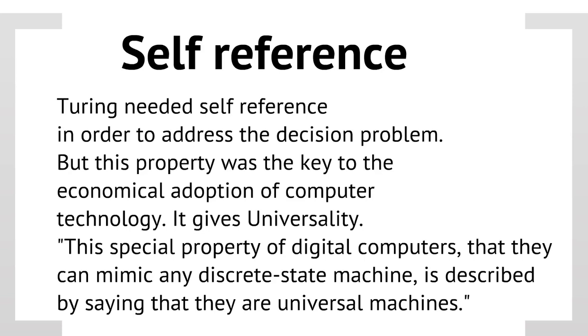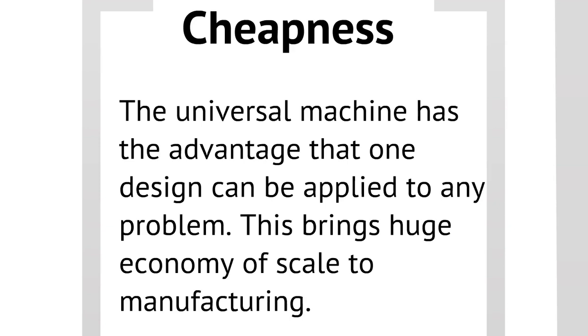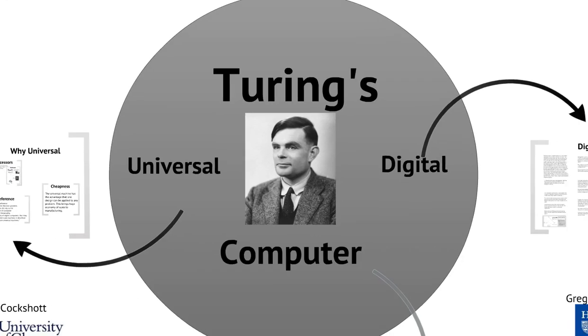What Turing said, this special property of digital computers, that they can mimic any discrete state machine, is described by saying they are universal machines. Now, this concept of universal machines is very important. It actually, I think, provides a key to understanding the concept of abstract labour in another context. Now, universality brings cheapness. A universal machine has the advantage that one design can be applied to any problem. This brings a huge economy of scale to manufacture. Millions and millions of Intel and ARM chips can be turned out, all identical, but all being applied to different problems.